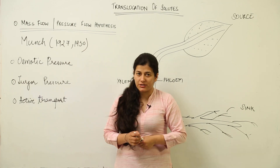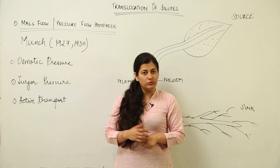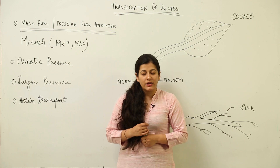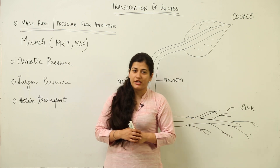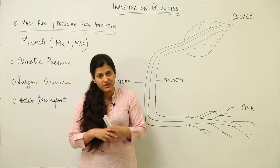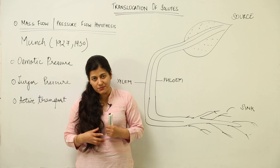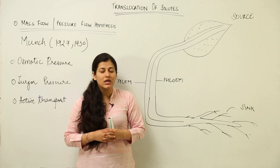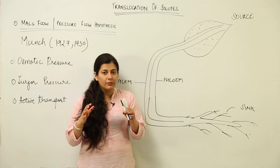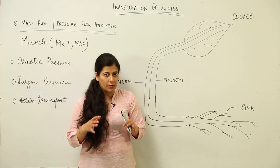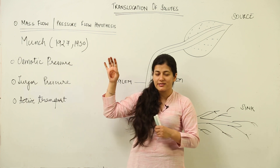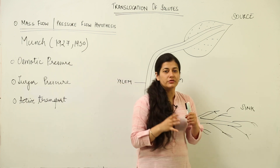We had talked about the downward translocation by the phloem, the trachery elements, and the sieve tube elements and sieve cells being involved in both upward and downward movement. Now we have a proposition or hypothesis known as the mass flow hypothesis that we are going to study.